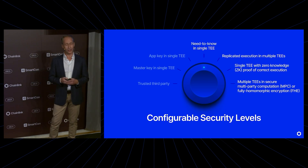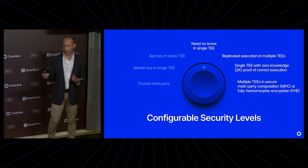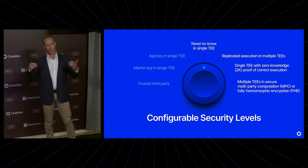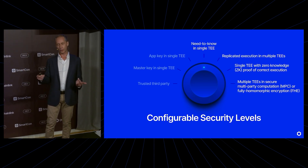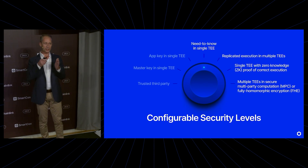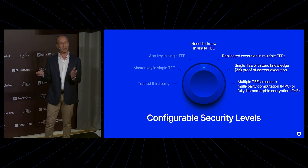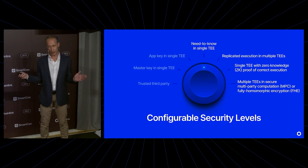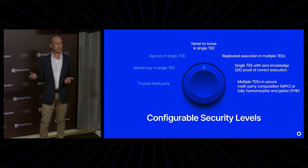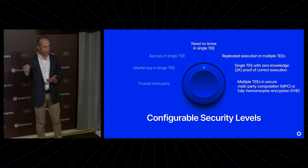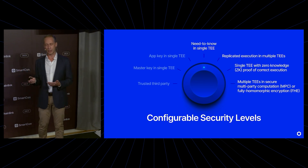And that's just getting us started — that's how we're going to deploy in the beginning. We have an ambitious and progressive roadmap to improve security more and more as we continue. On the roadmap, we want to execute in multiple TEEs at the same time, so that you can verify results on multiple TEEs to improve your integrity. We also want to add mathematical guarantees of correctness by letting a TEE prove in zero-knowledge that it actually performed the computation correctly.